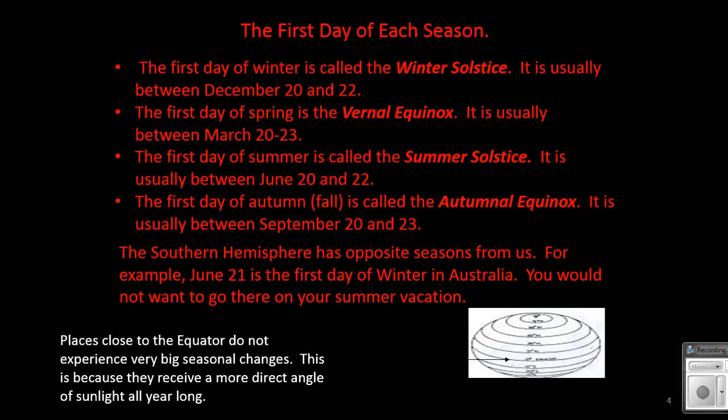As we continue around the seasons, we end up at the summer solstice, which is in June. During the summer solstice, the Sun is pointed most directly at the Tropic of Cancer, and the Northern Hemisphere is pointed most directly at the Sun, so we have our longest periods of daylight in the Northern Hemisphere.